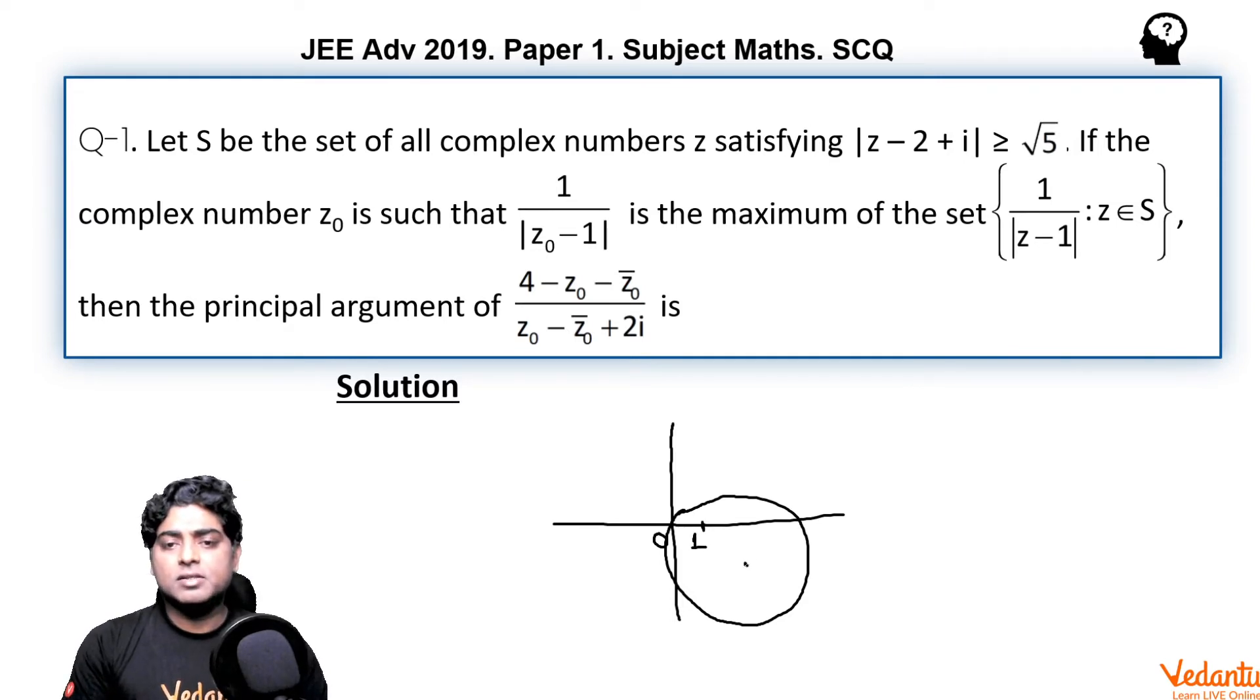So z0, now 1 comma 0 is here, this is 1. So z0 should be somewhere whose distance from 1 is minimum, so we should connect 1 with the center and extend it. Z0 would be here because this is the point lying on the circle which is situated at minimum distance from the point 1 comma 0.